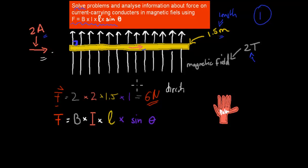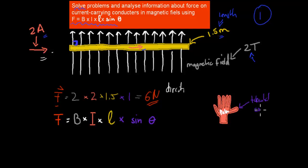So remember the right-hand rule. What you have to do is have the actual direction of your current as your thumb. So our thumb is pointing in the direction of the current. Then the direction of the magnetic field corresponds to your fingers.